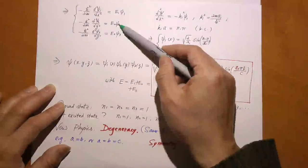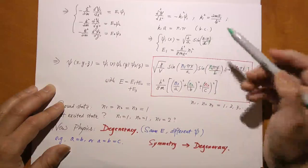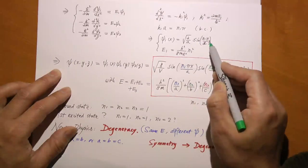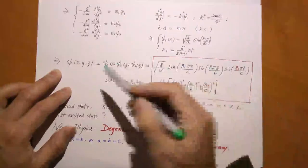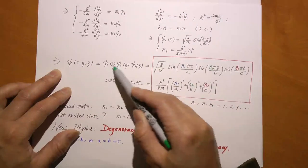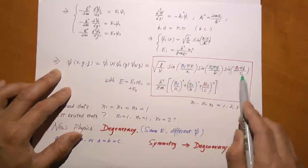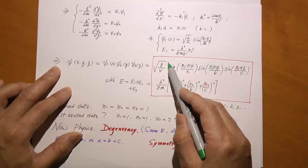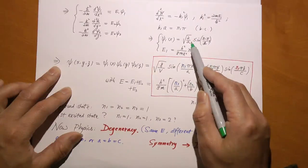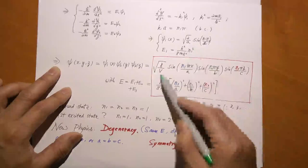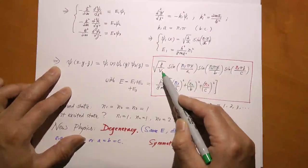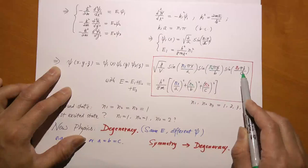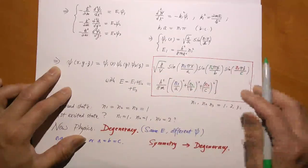Similarly you can find what happens for y and z with similar equations. For psi2, I get sqrt(2/B) times sine of N2·π/B times y, and so on. The wave function is the product of all three wave functions: psi1, psi2, and psi3. The overall normalization constant is the product of all three constants - sqrt(2/A) times sqrt(2/B) times sqrt(2/C), where V = A·B·C is the volume of the box. And E = E1 + E2 + E3.